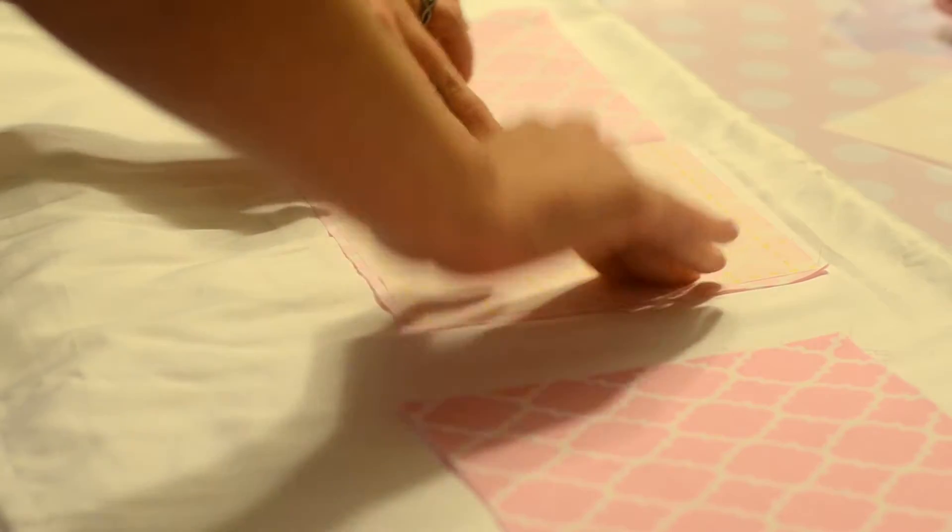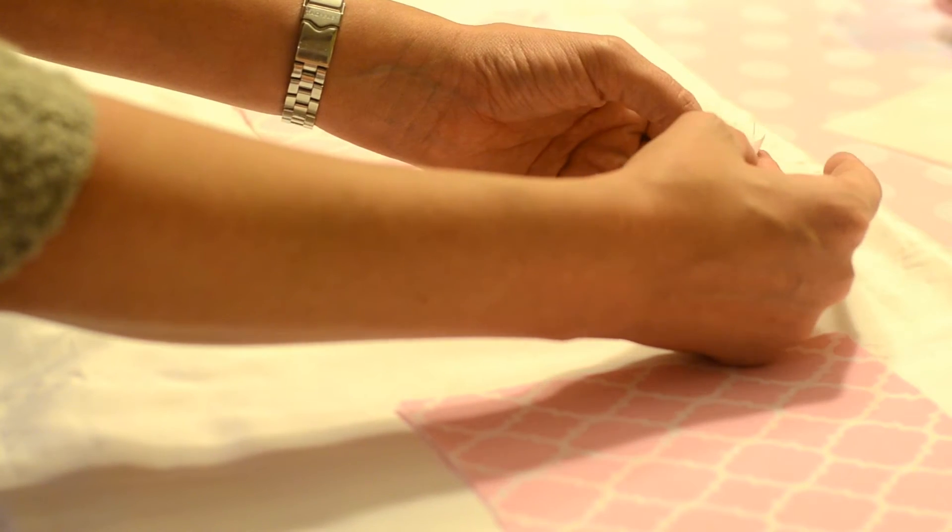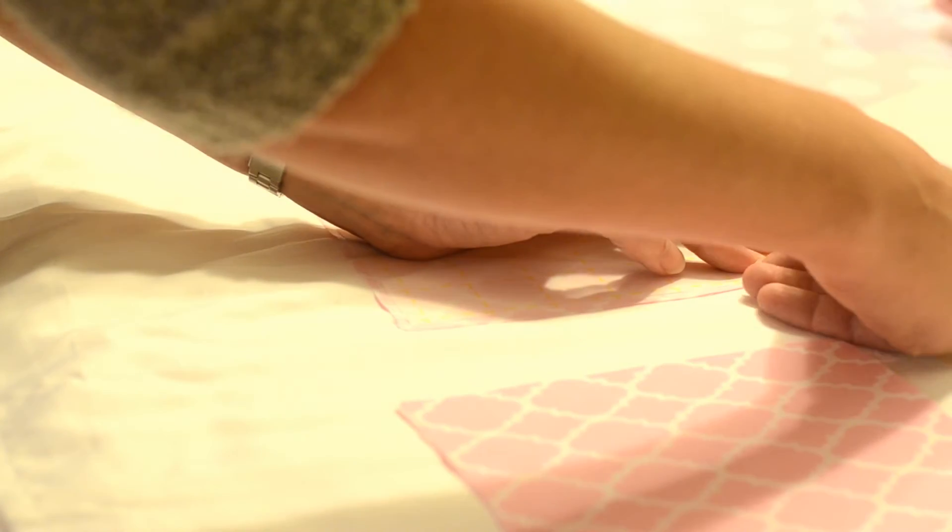We'll sandwich a piece of Steam-a-Seam Light 2 between two pieces of fabric with the right sides out. This is to prevent fraying of the fabric.